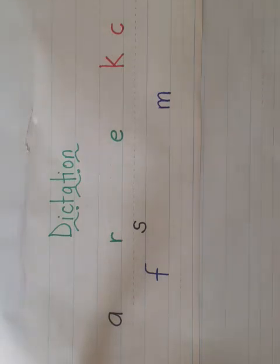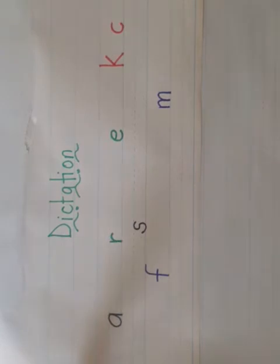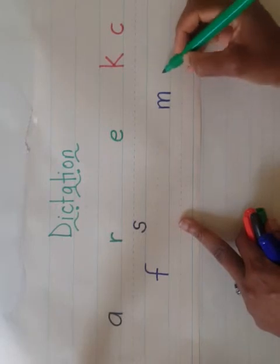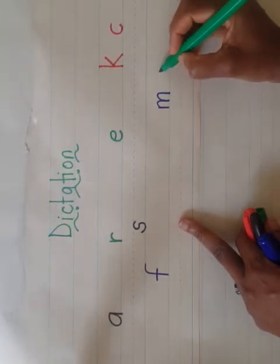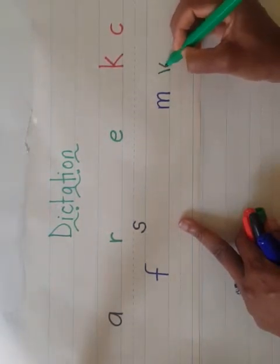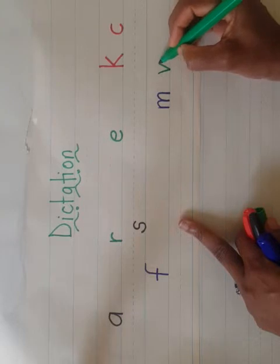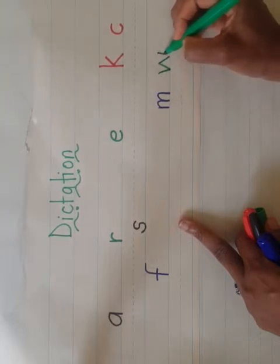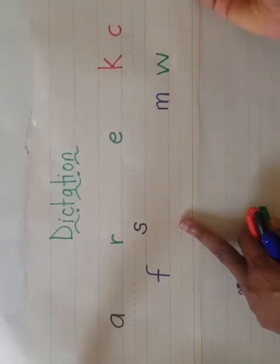What letter makes the 'w' sound, as in wind? W — yes, you're right, W makes the 'w' sound. This is how we write our W: it looks like two V's put together in a W.